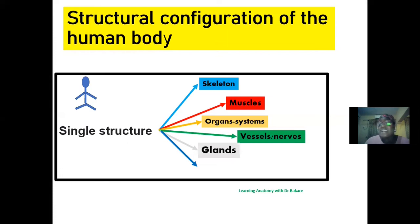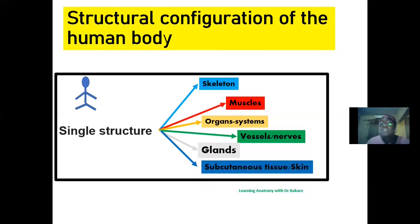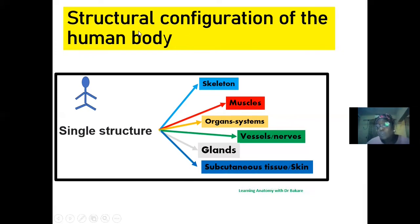We also have glands, which secrete chemical substances that help to control metabolic activities of the body. Different organs undergo different activities under the influence of hormones secreted by glands. Then we have the subcutaneous tissue and skin, which forms the external configuration of the body, covering up the entire structure on the outside. The subcutaneous tissue is the first layer, then overlined by the skin. Combining all these structures gives us the single structure seen as the human body.